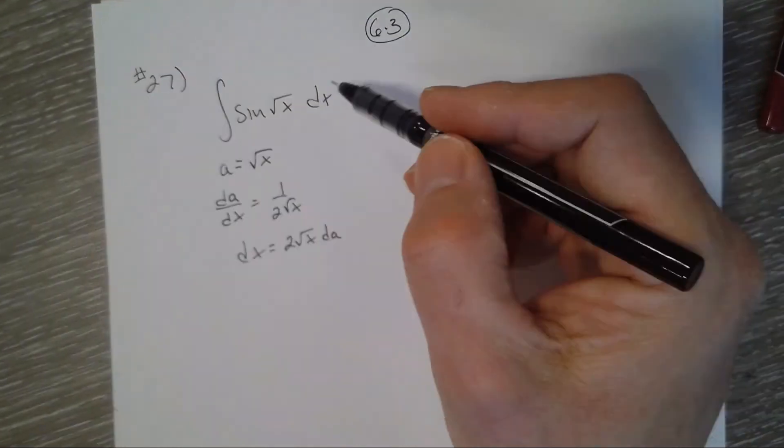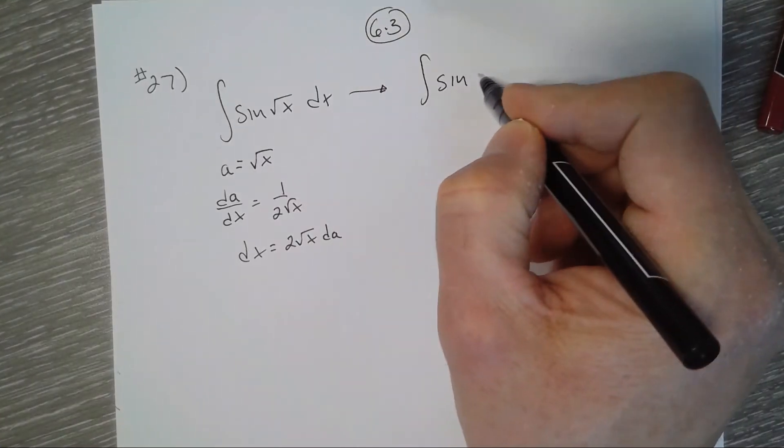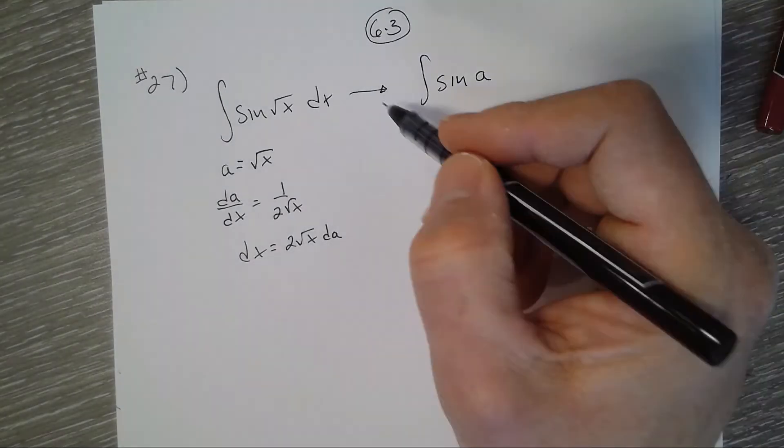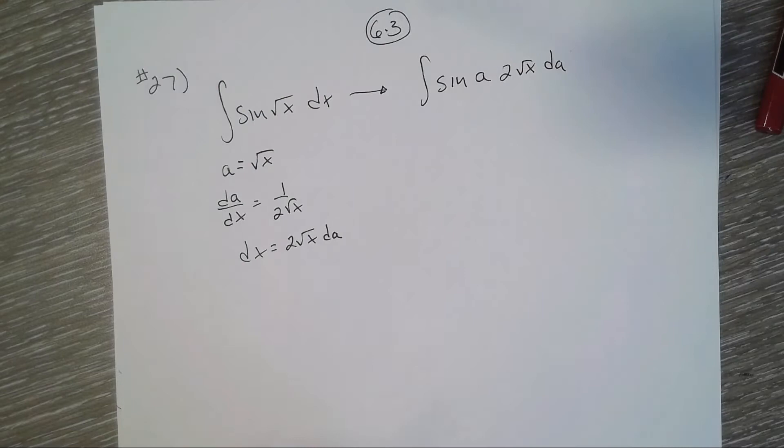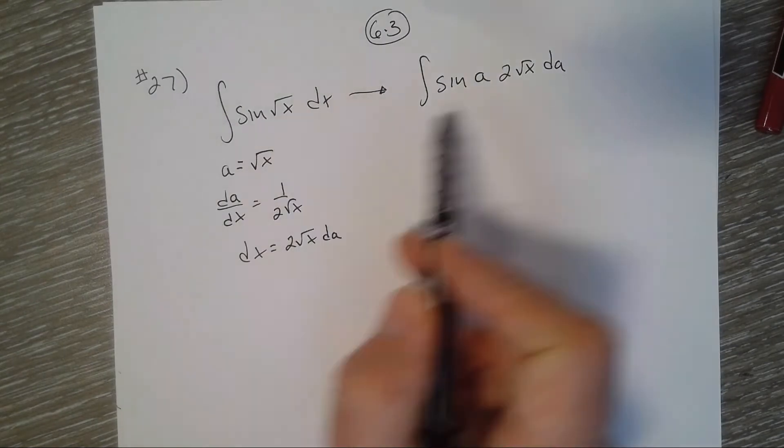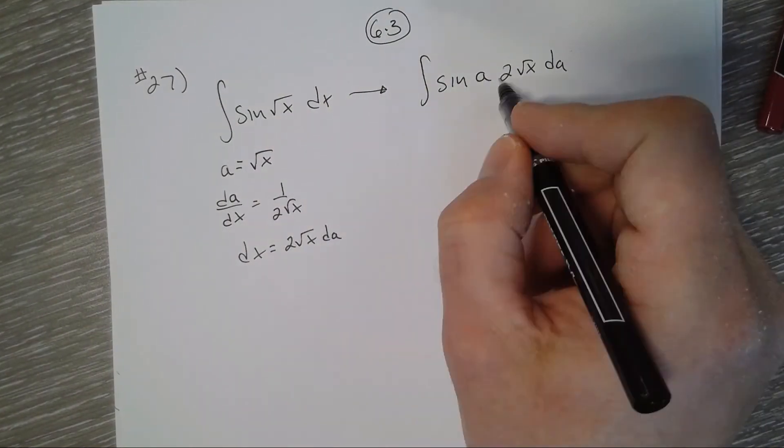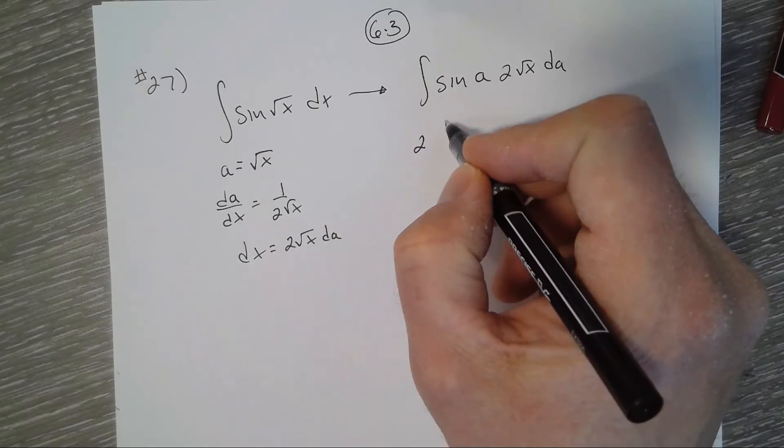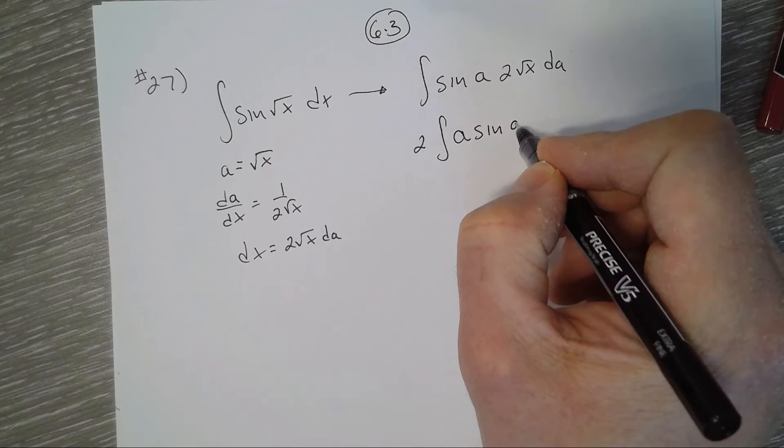So now we're going to write this integral in terms of just a if we can. So sine of a times dx, which is 2 square root of x da. We still have x in there, but we know that a is the square root of x, so we can put that as a. I'm going to bring the 2 out, so 2 integral of a sine a da.